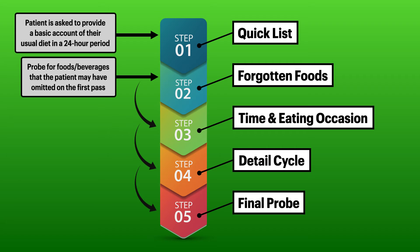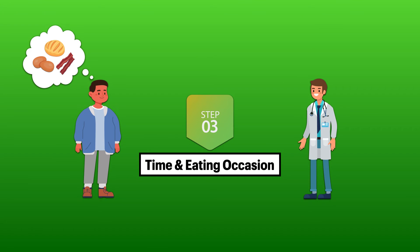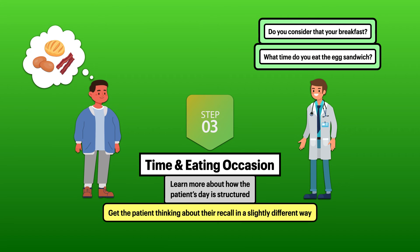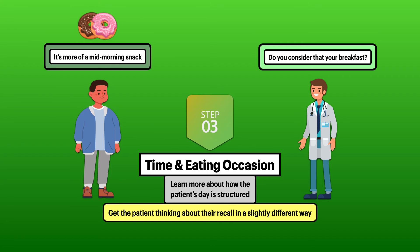By the time you advance to the third step, most of the foods and beverages for the 24-hour period should be known. The next thing you'll want to do is attach a time and title to each eating occasion. For example, you ask questions like, 'What time do you eat the egg sandwich?' and 'Do you consider that your breakfast?' One goal is to learn more about how the patient's day is structured. Another goal is to get the patient thinking about their recall in a slightly different way, which may help them remember more information — for instance, they may say, 'It's more of a mid-morning snack. I usually have two donuts with my coffee about two hours before it.' This is the kind of information you may not uncover with just one pass.